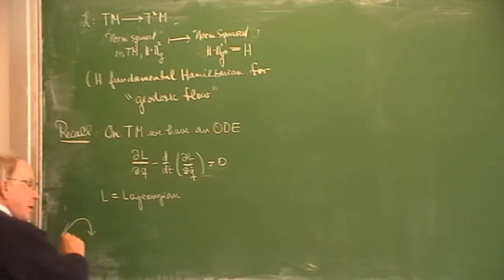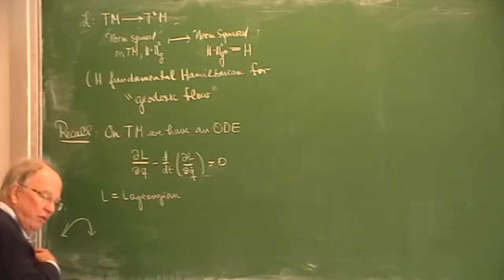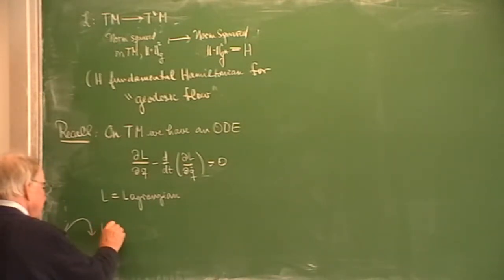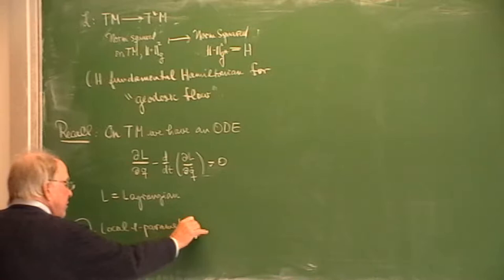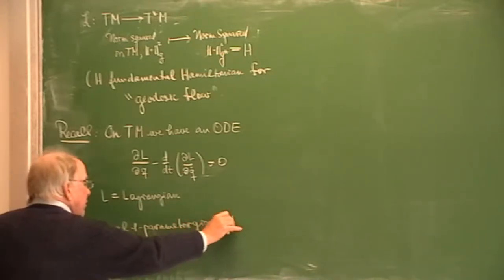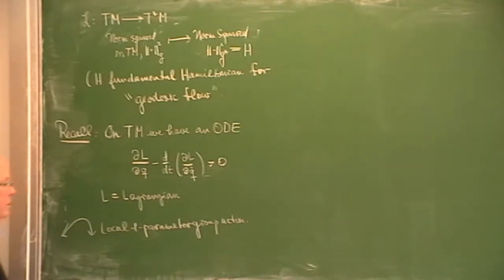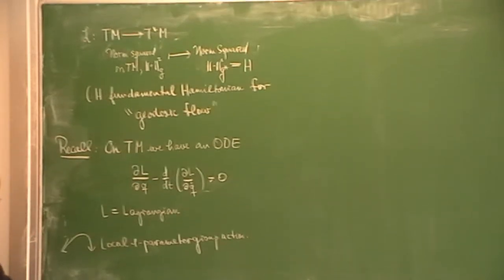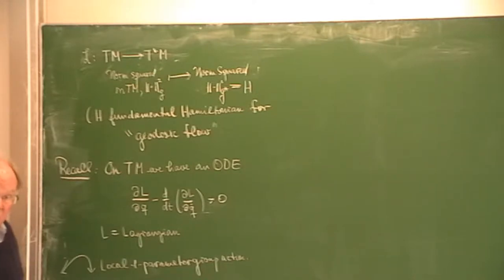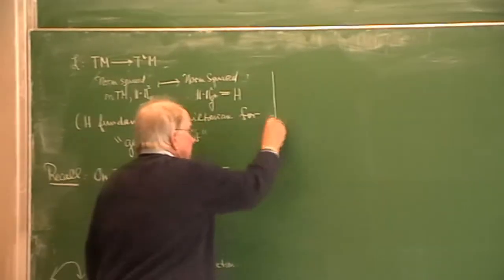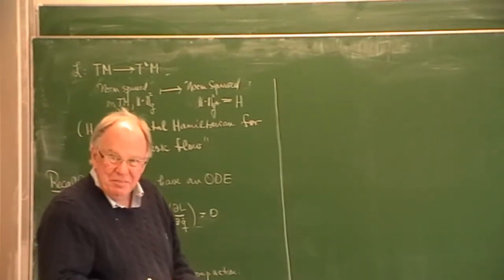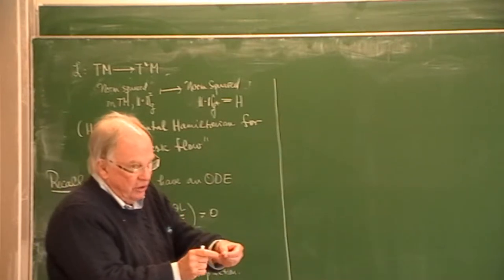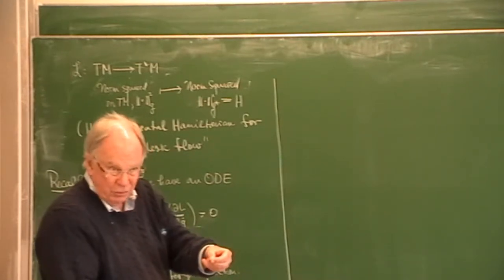And of course—I will re-emphasize this a thousand times because it is so important to me—this is the same thing as a local one-parameter group action on the tangent bundle. Second order on the base, first order on the tangent bundle: it's a local one-parameter group action. Local is a little bit delicate, because it means that the time you can integrate this ODE is dependent on the point you started with and the initial condition.